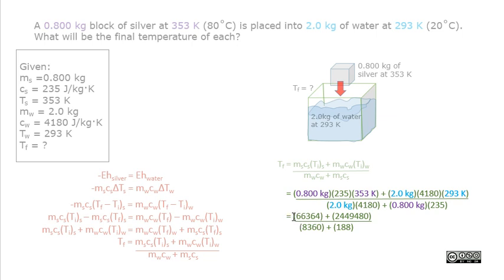We get the numbers 66,364 plus 2,449,480 over 8,360 plus 188. The final temperature becomes 294 kelvins or 21.3 degrees Celsius.